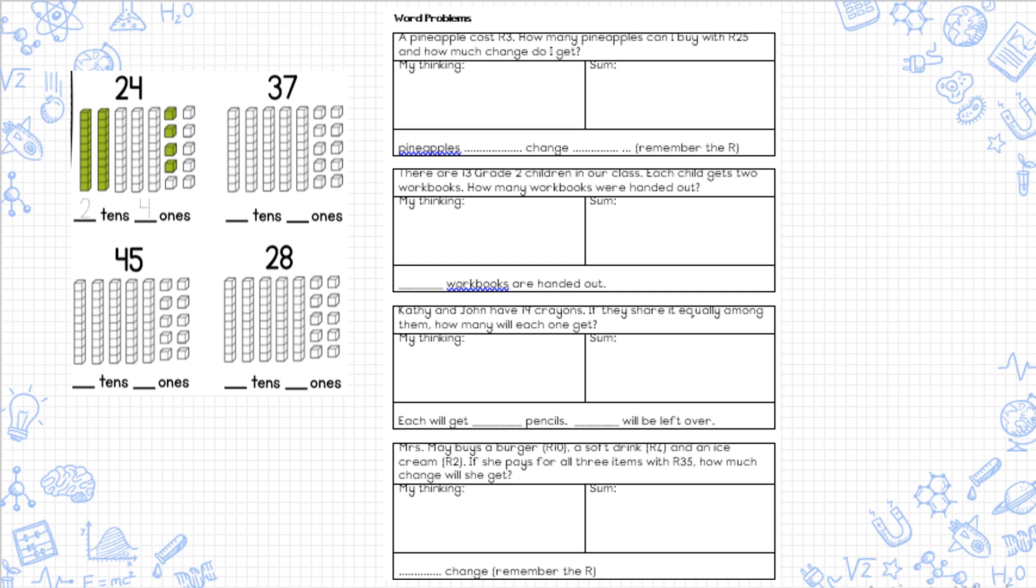Lastly, Mrs. May buys a burger for 10 rand, a soft drink for four rand, and an ice cream for two rand. If she pays for all these three items with 35 rand, how much change will she get? Once again, you're going to do more than one sum. You're first going to work out how much all of these things cost altogether. After that, you're going to work out how much change you need to get.